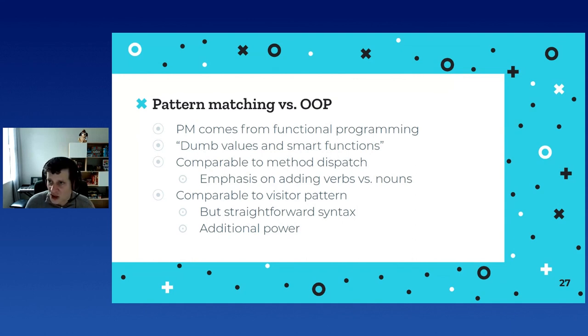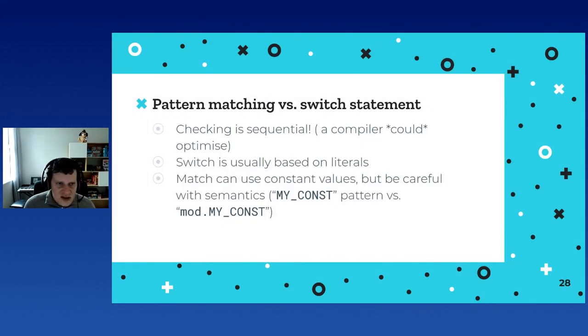So I see some great questions that I will answer on the Wonder app later on because I don't think we'll have time for questions within the talk. So as comparison, how does this compare with the switch statement? And so the checking is sequential while some switch statements have these computed go-tos that are typically faster because it's based on literals. I mean, a modern Python compiler in the future could do some optimizations if all your values are constant, but no one is talking about doing that anytime soon. And also, in a switch, you can use constant values, but you need to be careful with semantics, the problem I mentioned before. So again, it's not a great substitute for a switch statement. You can use it as that. It's not its main goal.